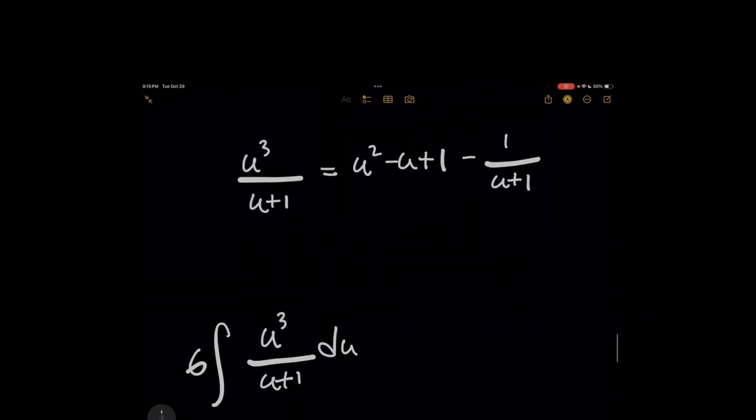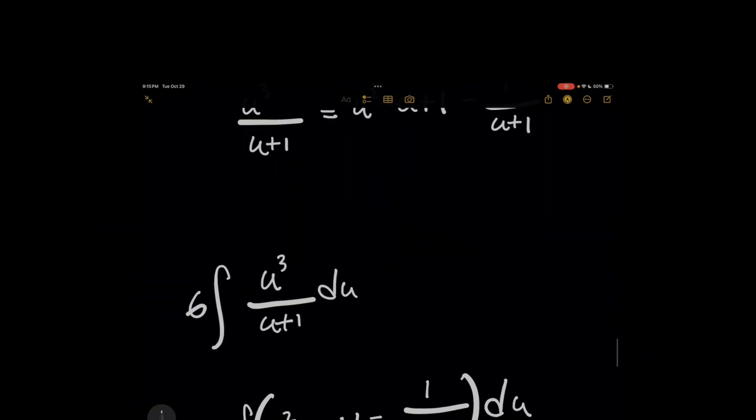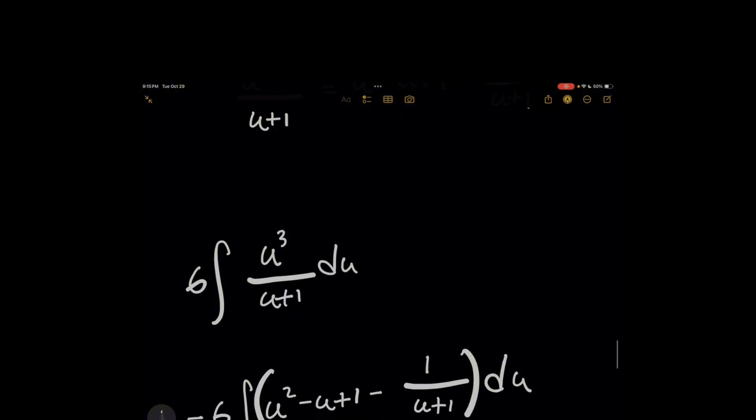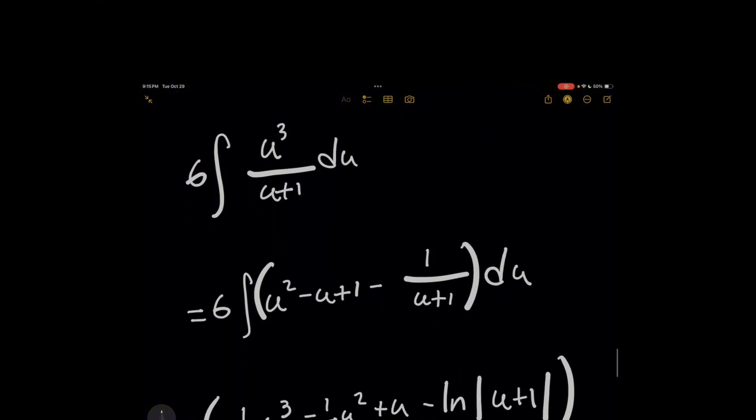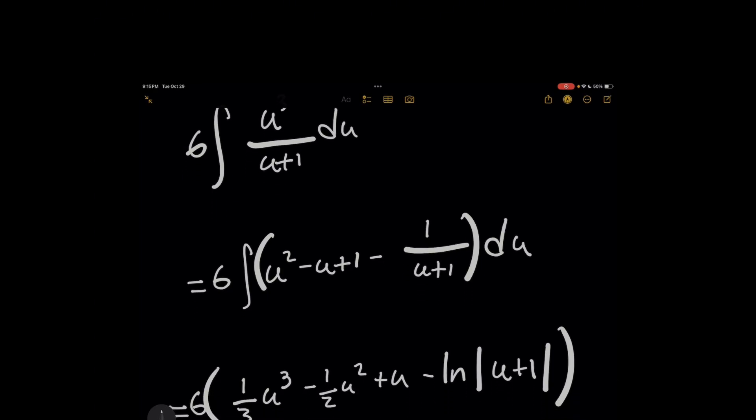So what we can do now is we can take this integral we were working on above and rewrite it by using the result of long division here. And then for everything in parentheses, I'm going to individually integrate it and add and subtract the terms, leaving the 6 out in front until the very end and not adding the plus c until the very end.